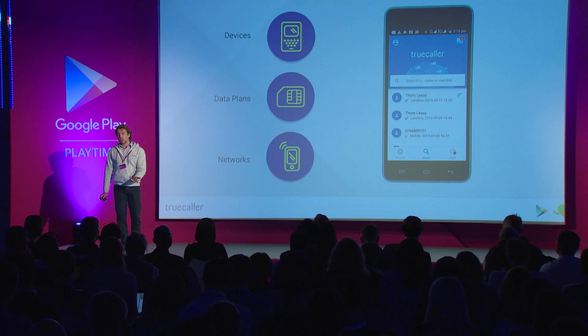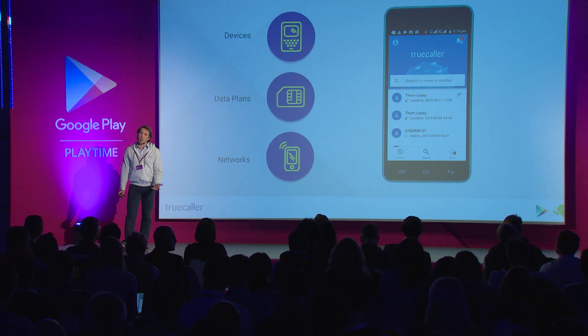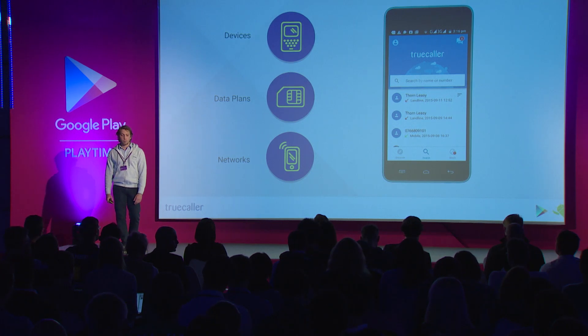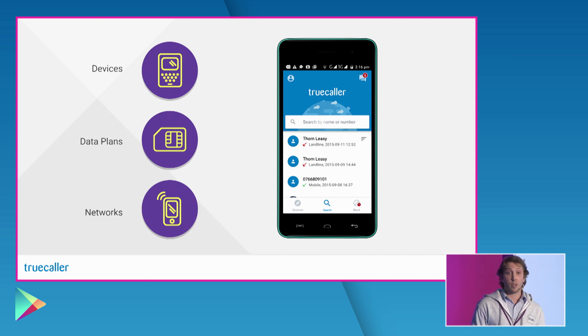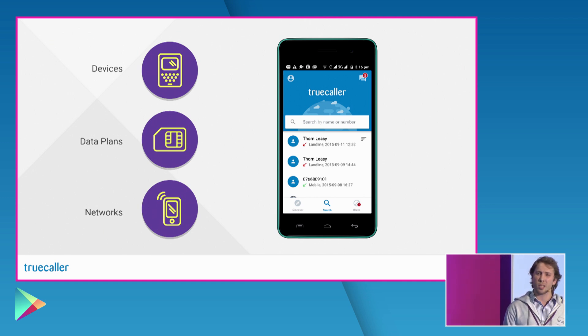Most likely they are not running the latest version of Android and they may not even get any updates. When it comes to data, users usually have prepaid plans that are not very cheap, so they use connectivity only when it's extremely needed. Since the smartphone might be the only entry point to the internet, they really care about data usage. And finally, networks are slow — 3G is now the norm, they are congested, and even Wi-Fi is slow because it's based on slow landline connections and not always available.